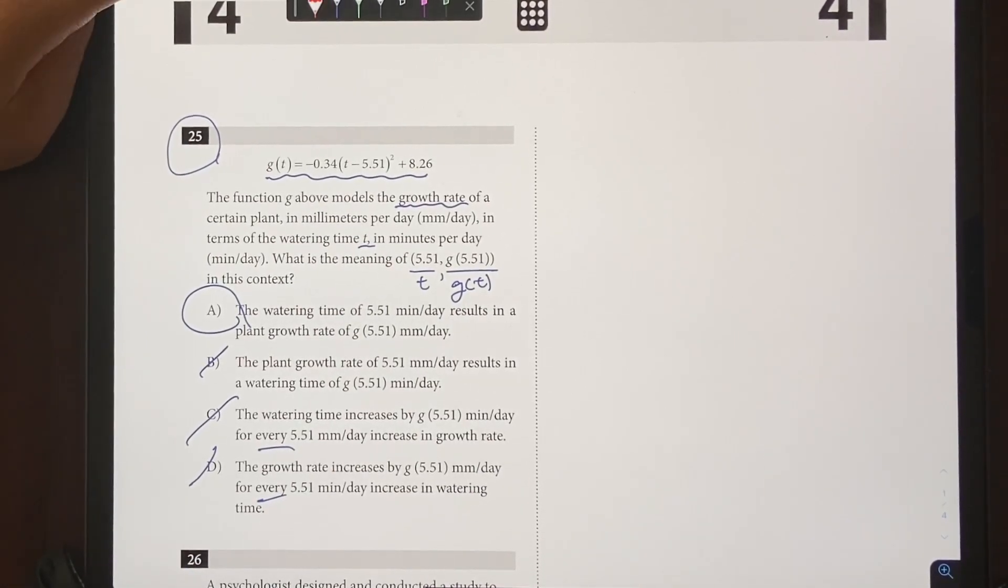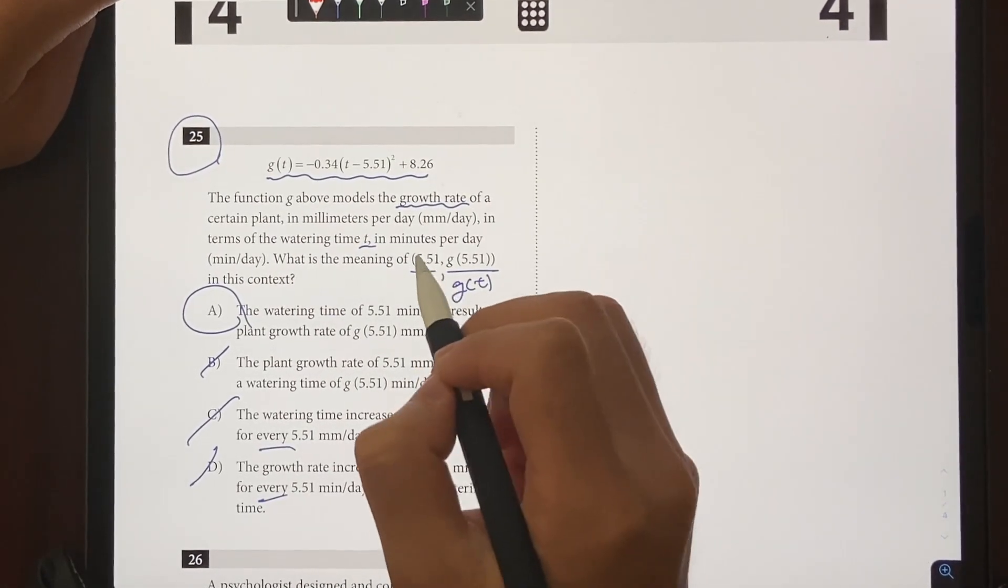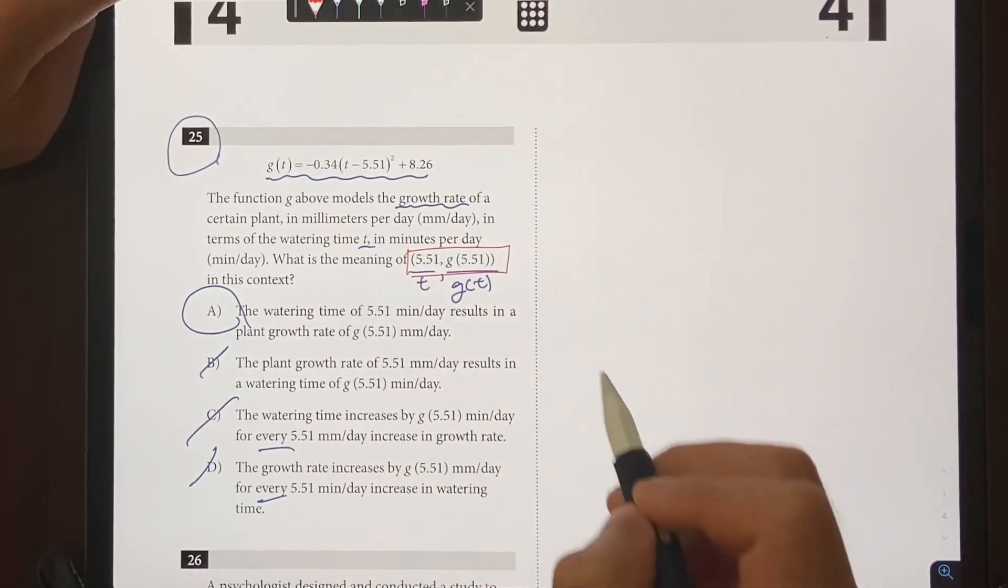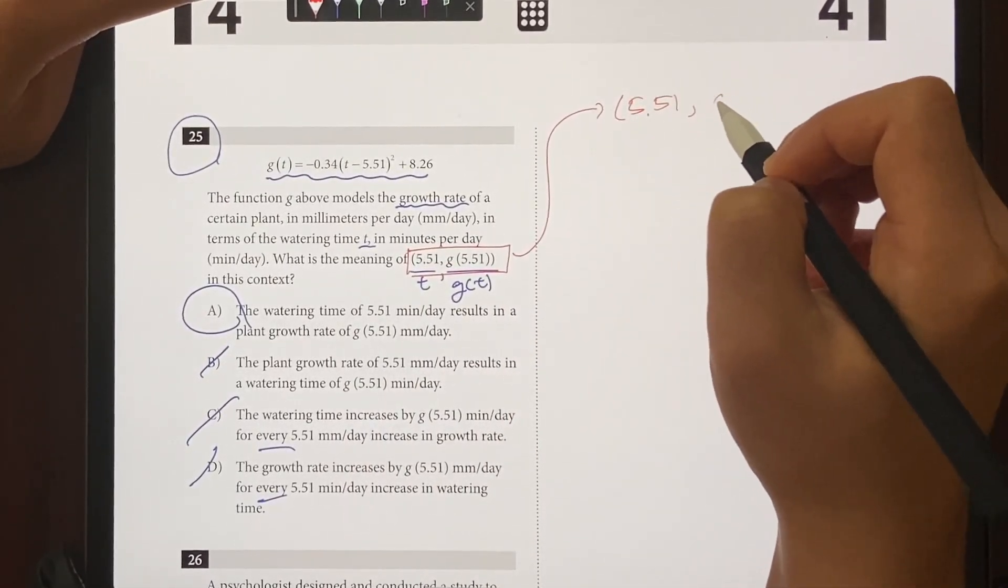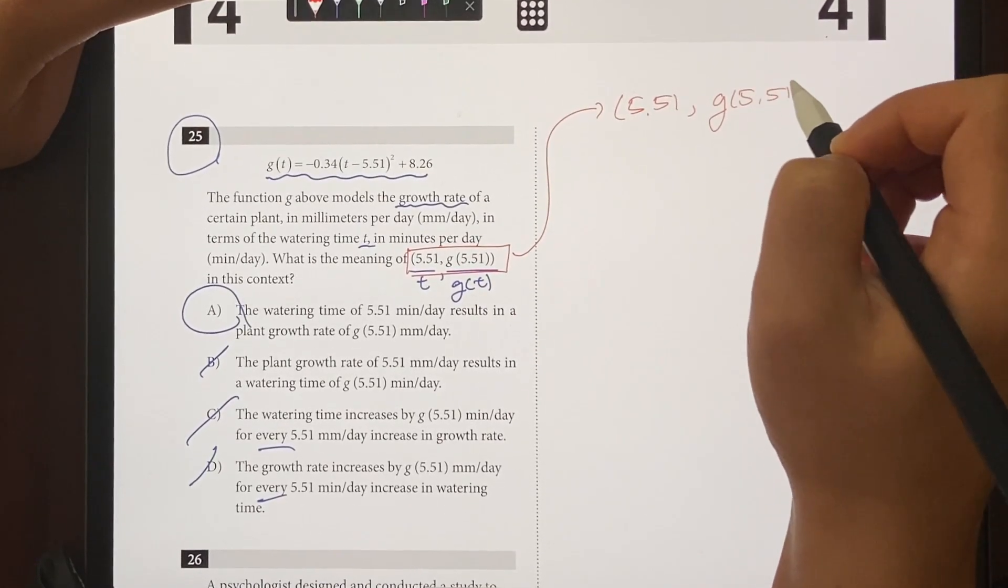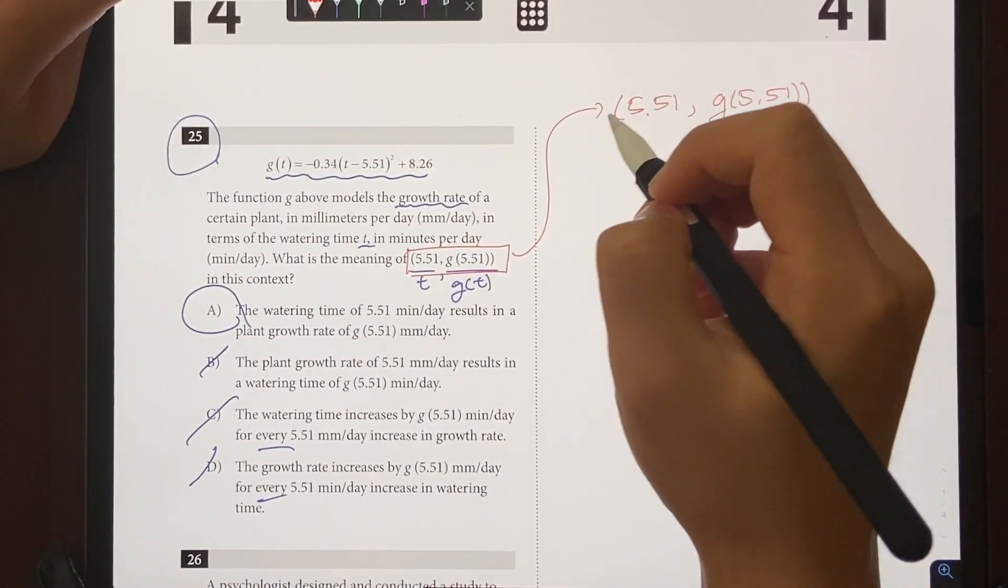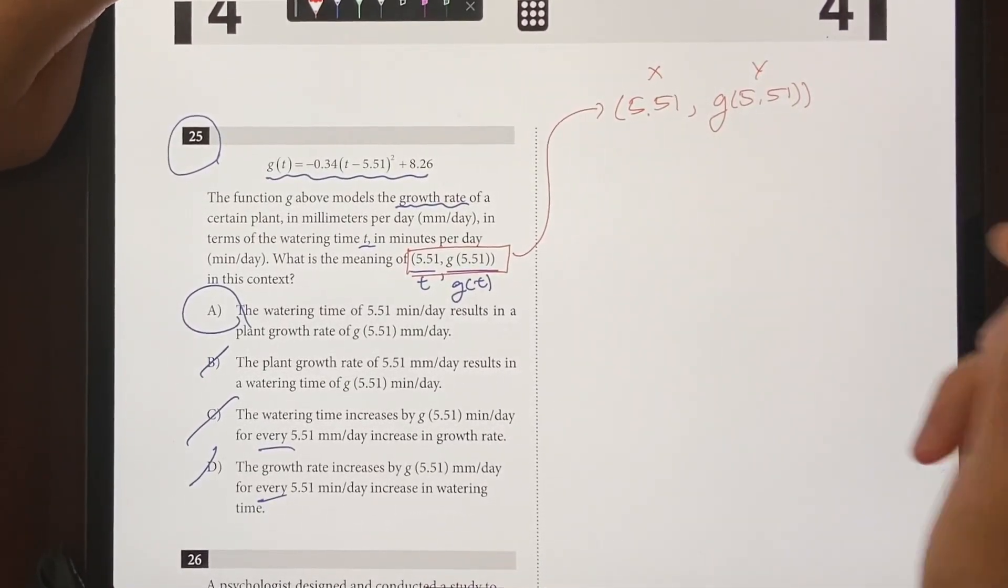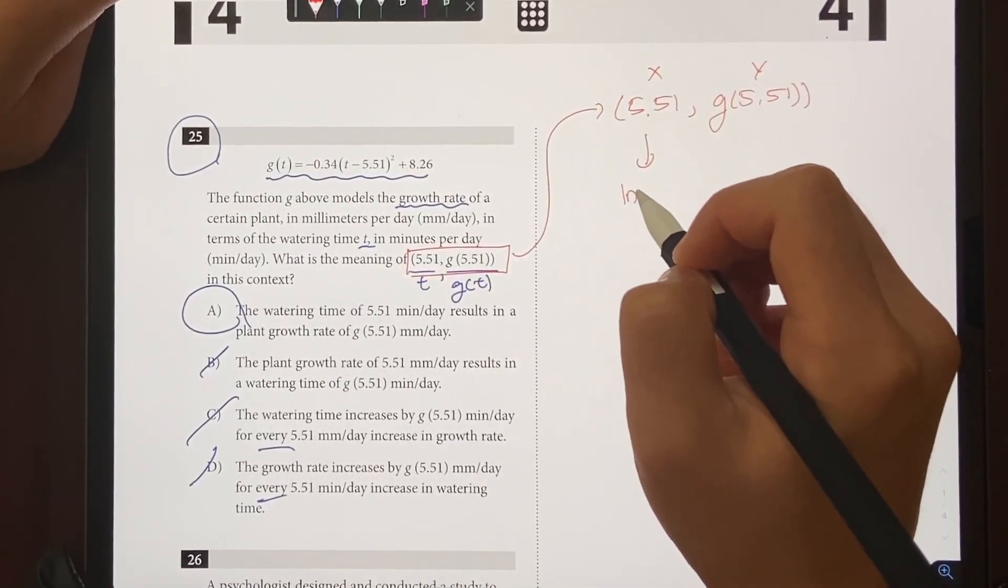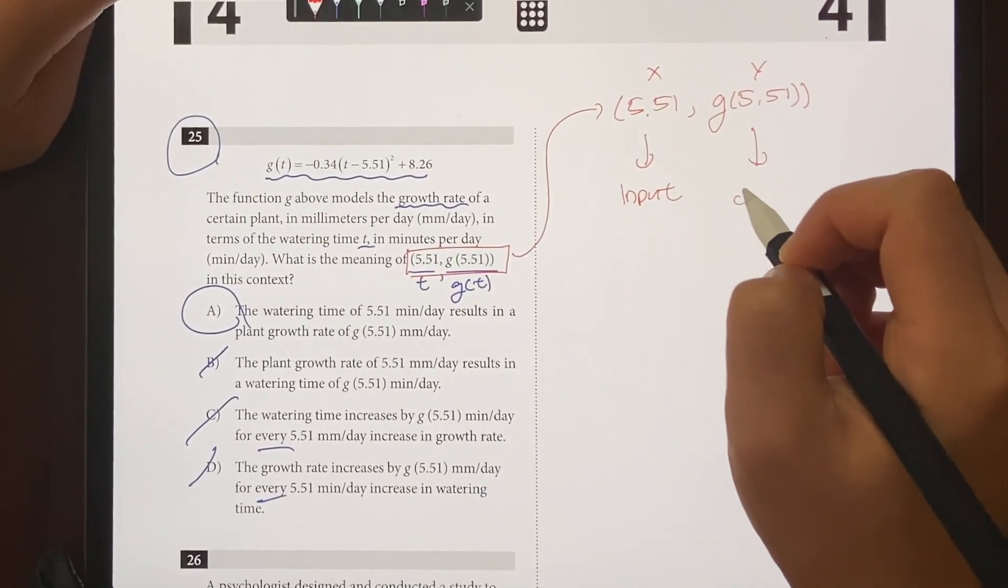Now let's go over exactly what happened in the past 10 seconds. The only thing you need to solve this question quickly is the understanding of these coordinates right there. So let's write it: (5.51, g(5.51)). When it comes to a coordinate, we know that the first one is going to be x, the second one is going to be y, and we know that x is referring to the input of the function and y is going to be the output of the function.